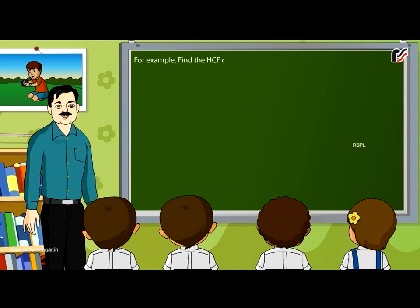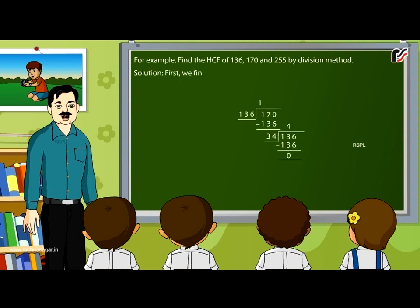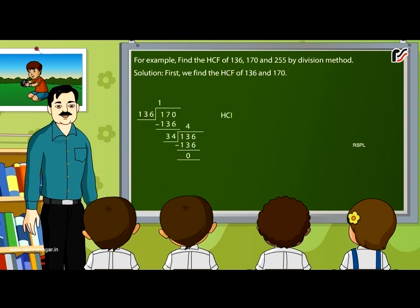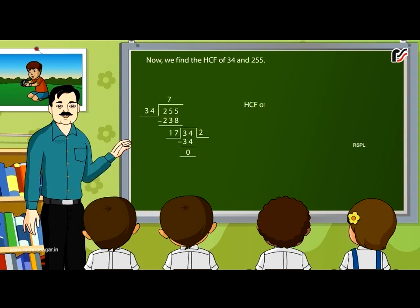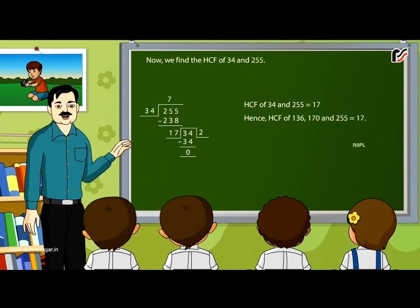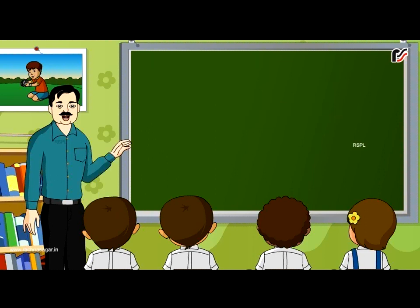For example, find the HCF of 136, 170 and 255 by division method. First, we find the HCF of 136 and 170, which is 34. Now, we find the HCF of 34 and 255, which is 17. Hence, HCF of 136, 170 and 255 is equal to 17.